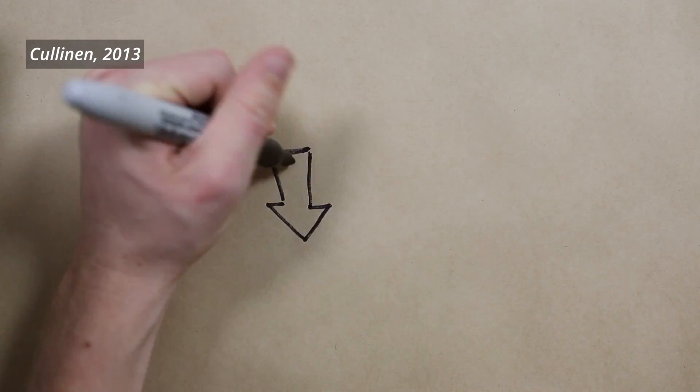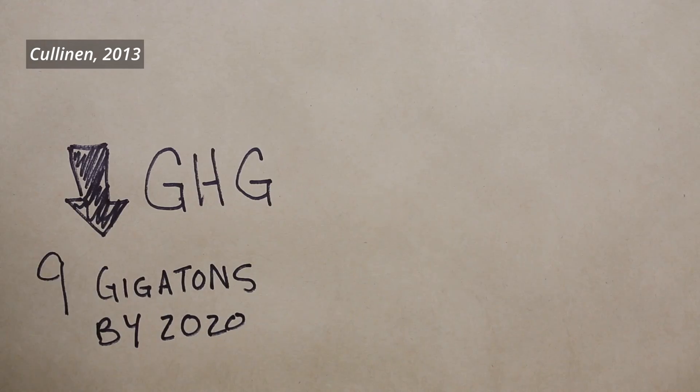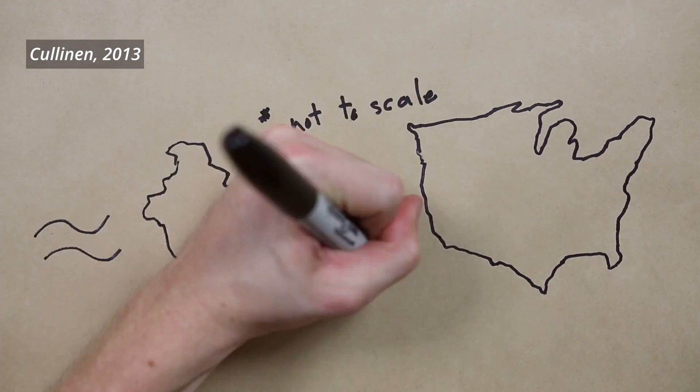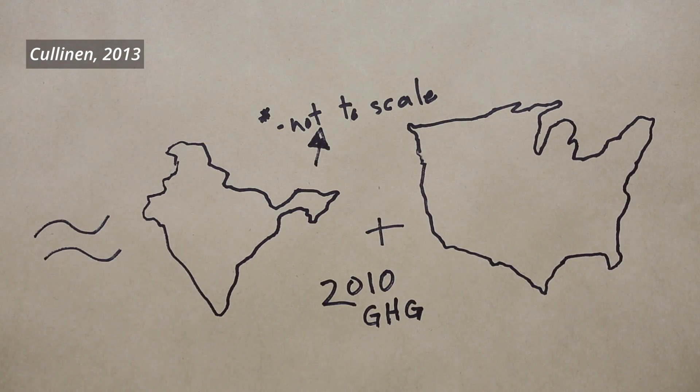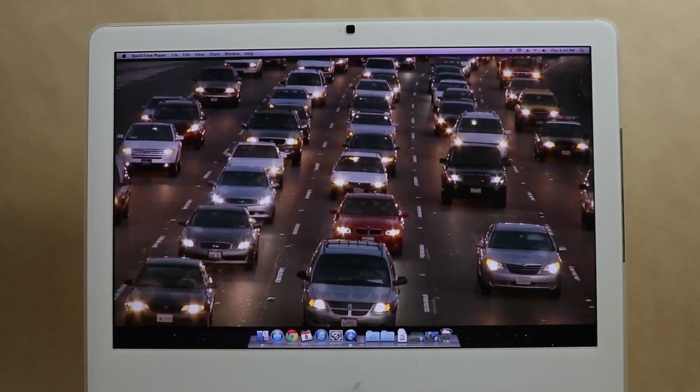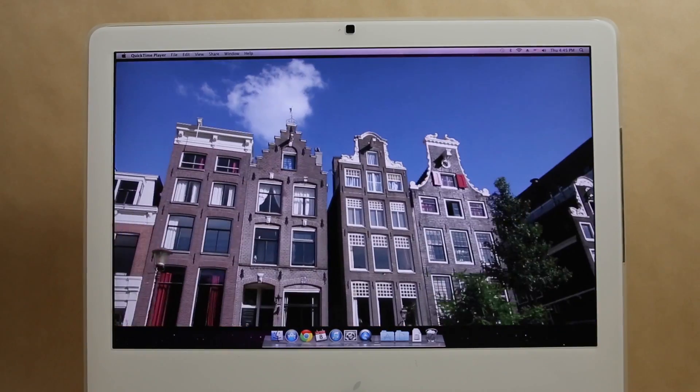In fact, we could reduce annual greenhouse gas emissions by as much as 9 gigatons by 2020. That's roughly equal to the 2010 emissions of India and the U.S. combined. And we could do so using sensors to do things like regulate water use on farms, route vehicles around traffic, better match energy output with demand, and create more efficient internal heating systems.